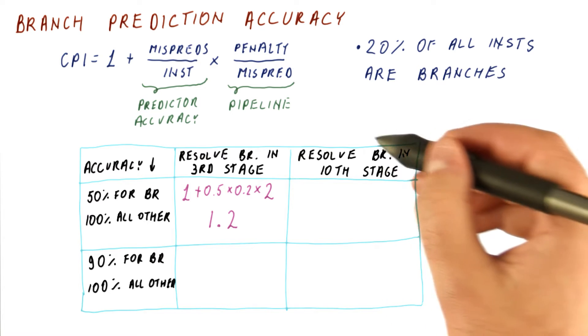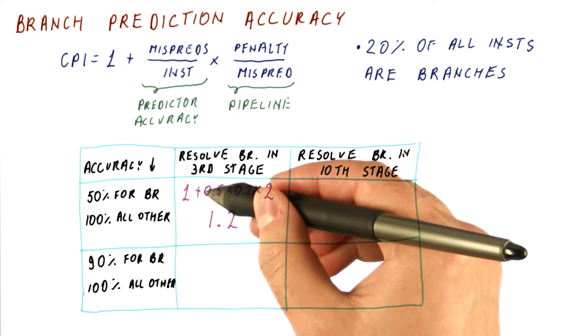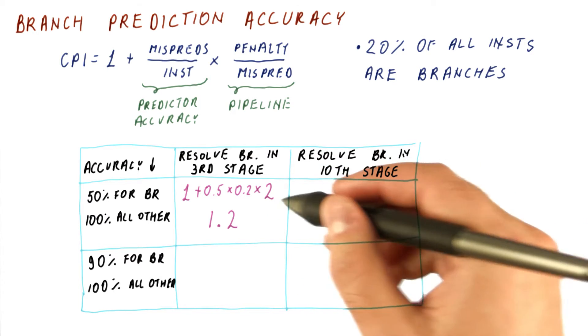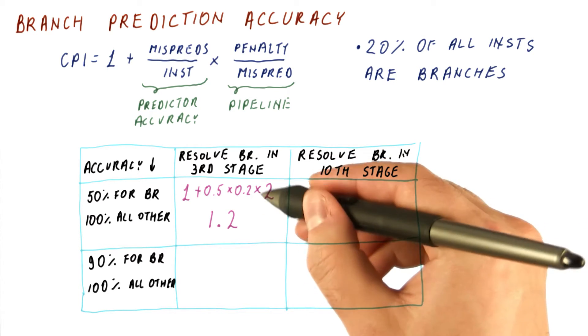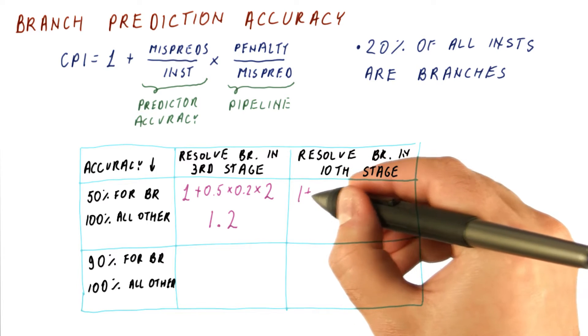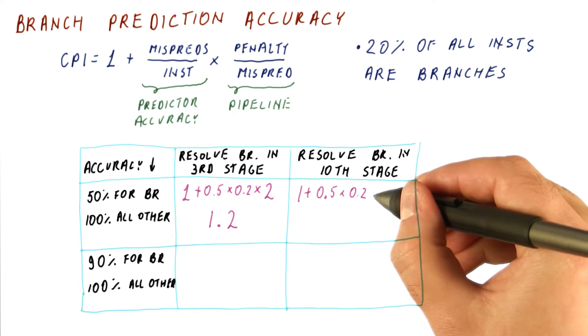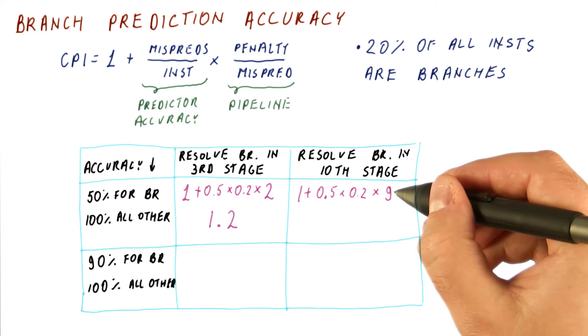If we resolve the branches in the tenth stage, this part is the same, the accuracy of the predictor and the frequency of branches. But the penalty now would be nine cycles. So we have 1 plus 0.5 times 0.2 times 9 in this case.